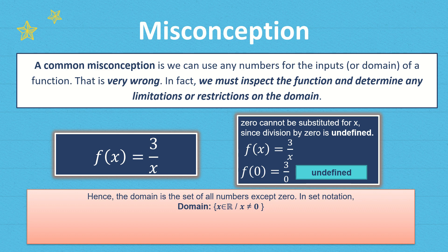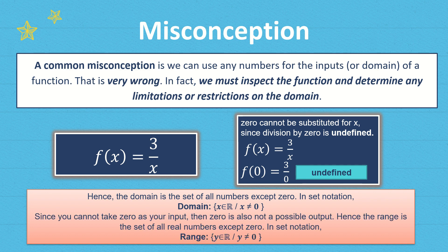Since you cannot take 0 as your input, 0 is also not a possible output. Hence, the range is the set of all real numbers except 0. In set notation, the range is: {y ∈ ℝ | y ≠ 0}.